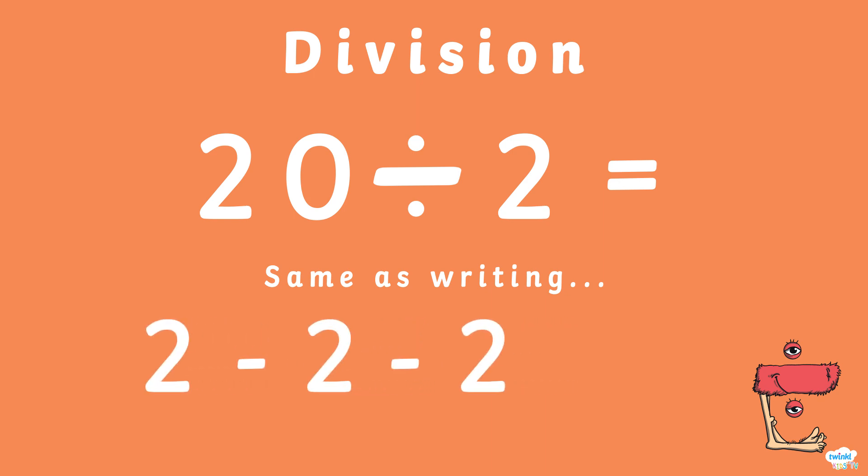Shall we look at how to do some simple division? The sign for division looks like this. 20 divided by 2 is the same as writing 20 minus 2 minus 2 minus 2, 16 more times.